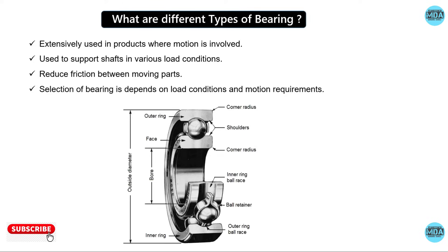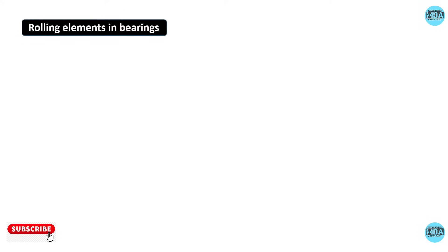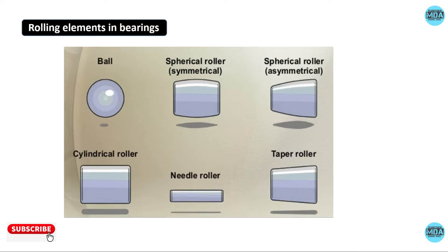Bearings are widely used in machines' transmission units. The rolling elements used in bearings are ball, spherical, spherical roller, cylindrical roller, needle roller, and tapered roller.